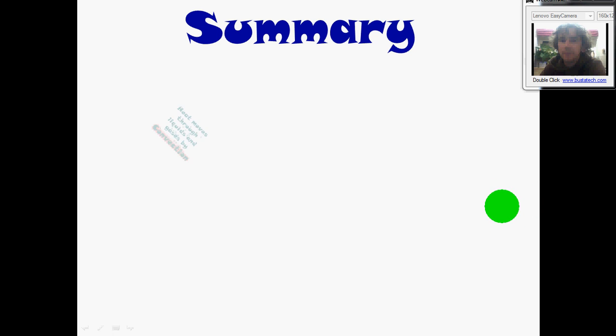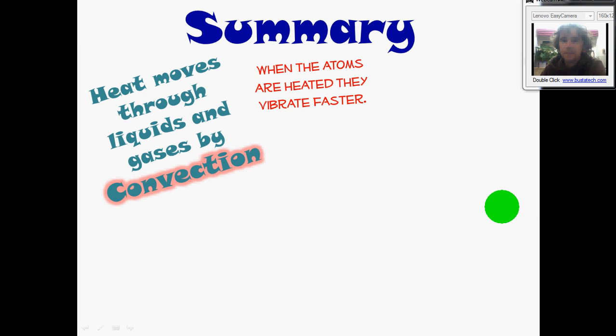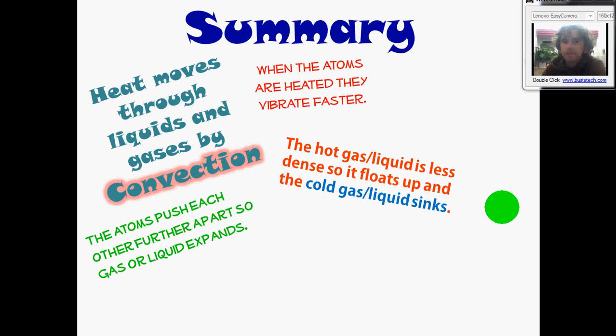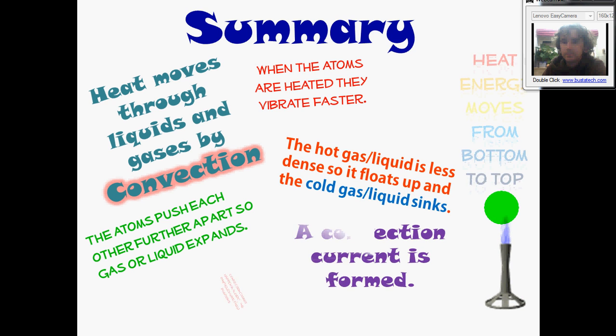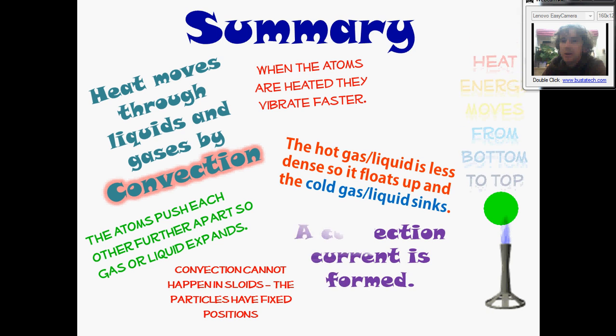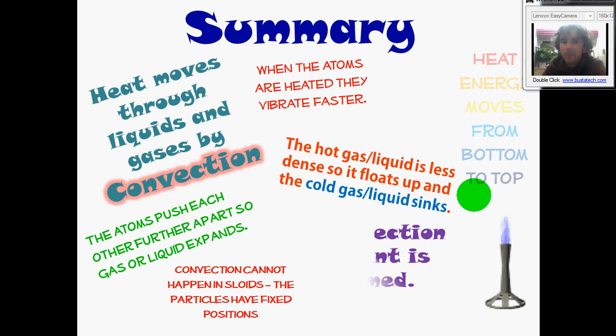Here's a summary. Key point. The atoms push each other further apart when they get hot. That means the hot gas or liquid expands. Because it's less dense, it's going to float up and the cold gas or the cold liquid sinks. And that sets up the convection current. That means the heat energy is taken from the top to the bottom as the hot liquid rises up or the hot gas rises up. But it can't happen in solids because the particles have got fixed positions.